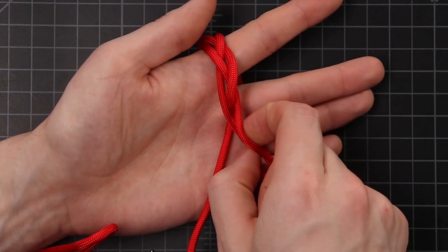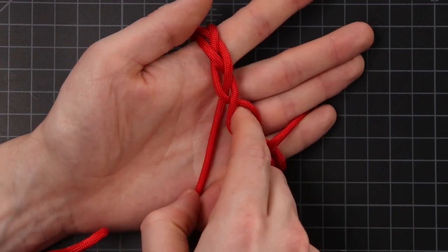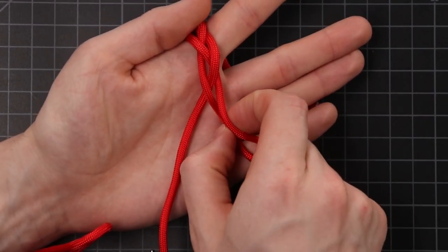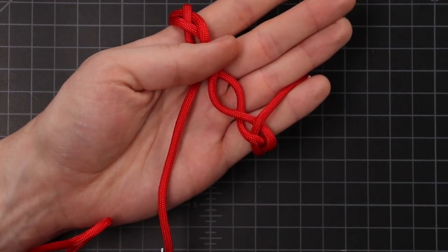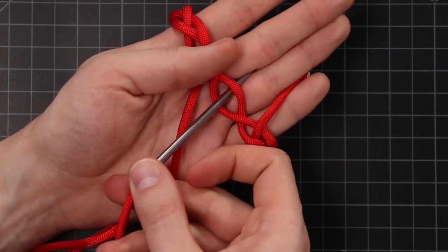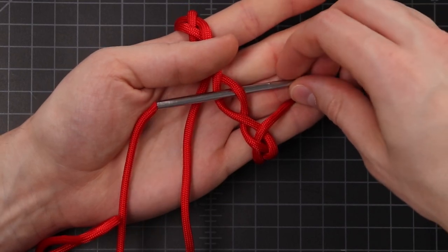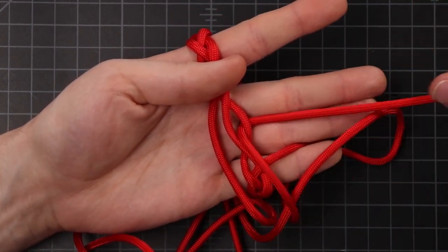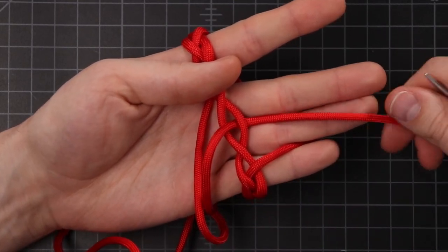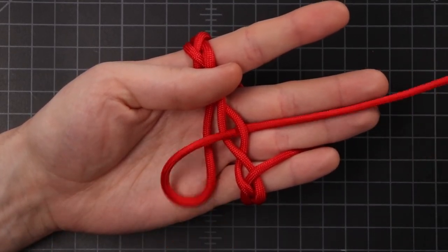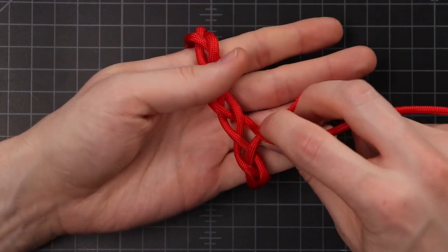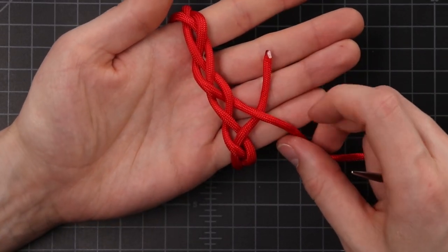We'll make one more twist. That right side cord over the top. Here, I'll show you that again. Right side cord over the top. Coming down through there with the fid. Now we're back to where we started, right alongside that standing end.